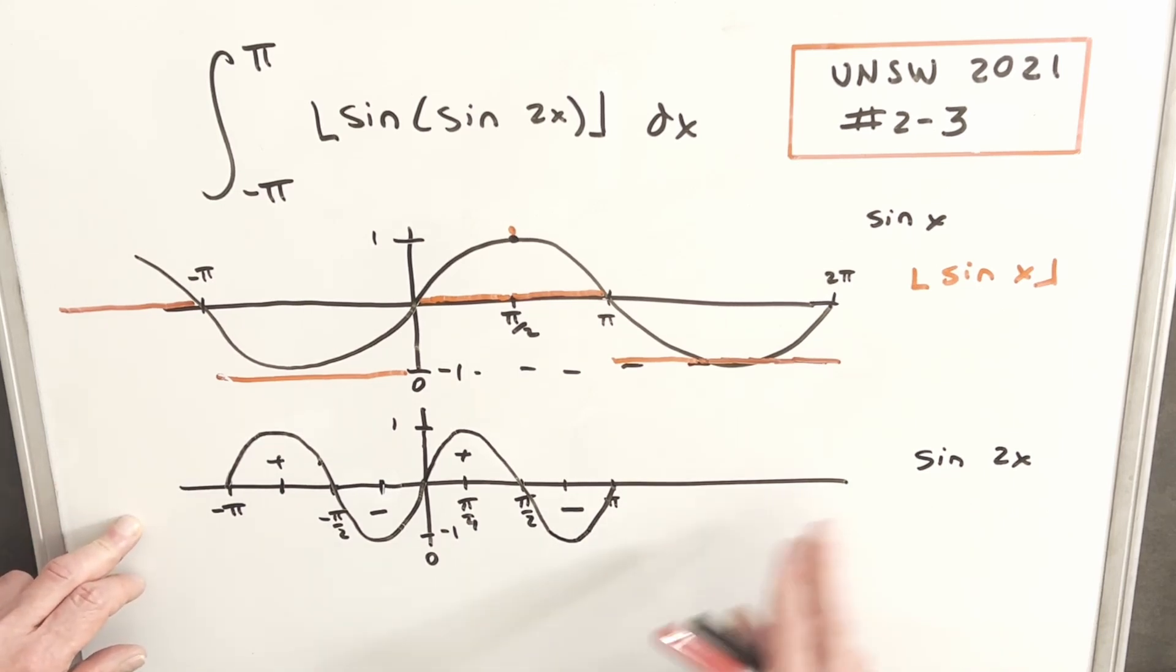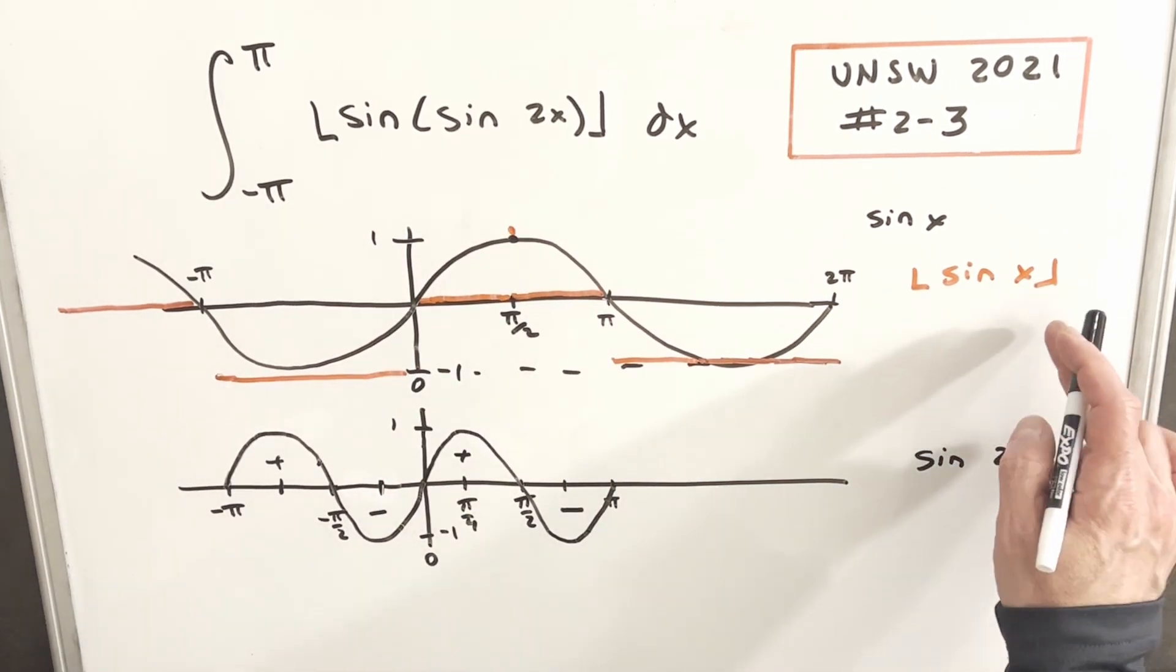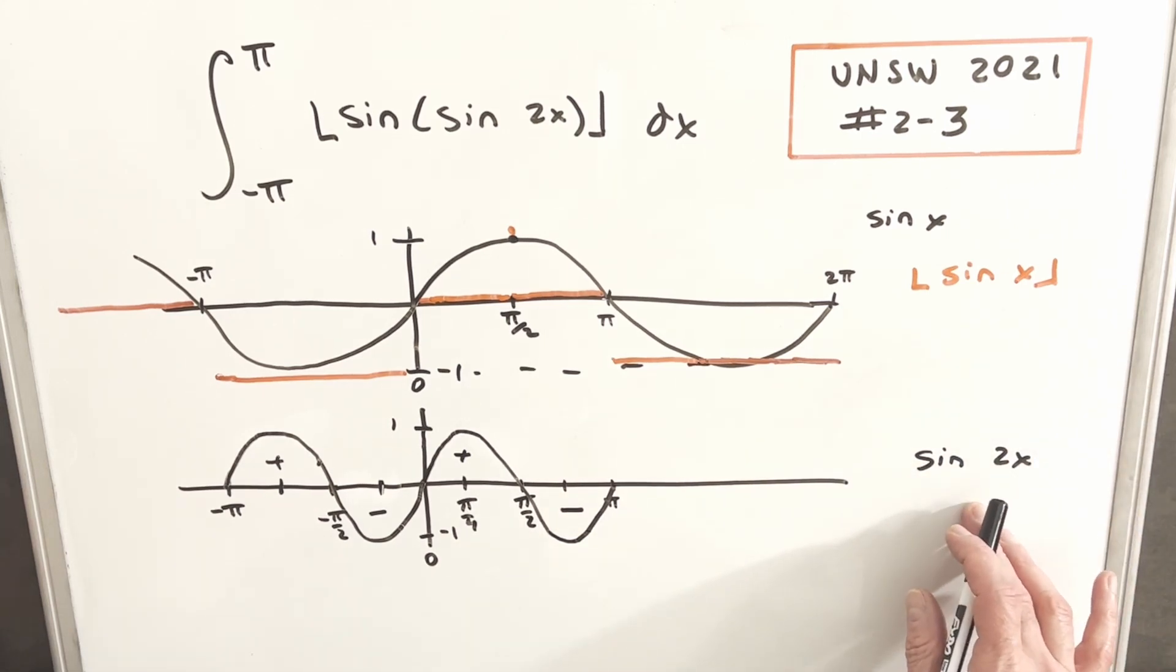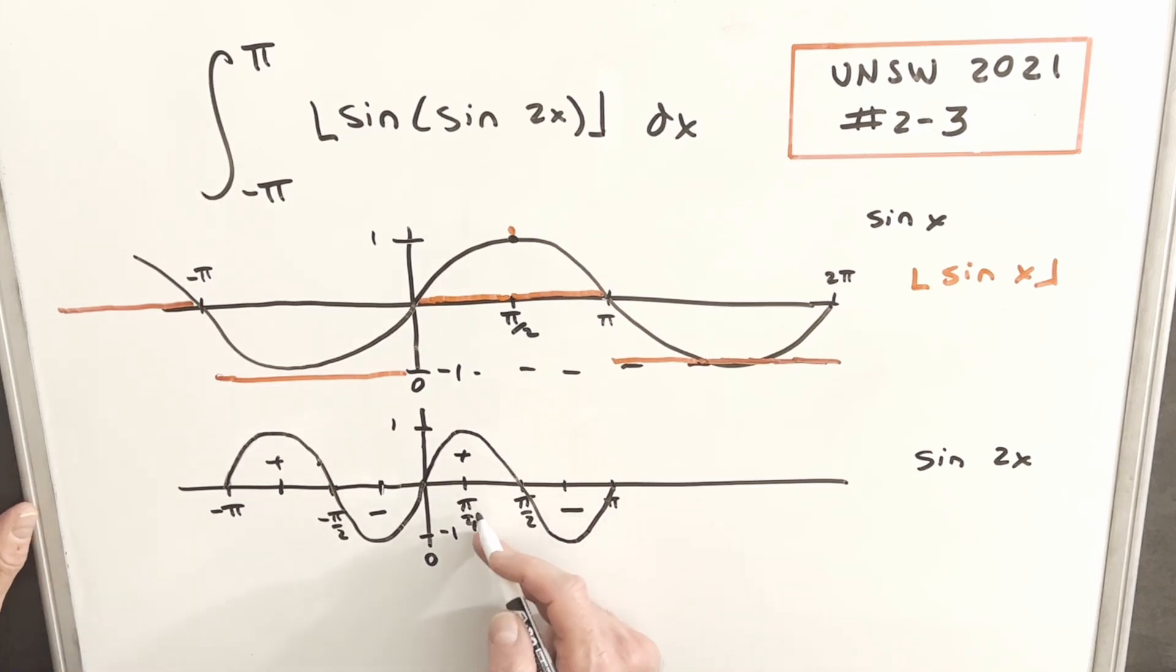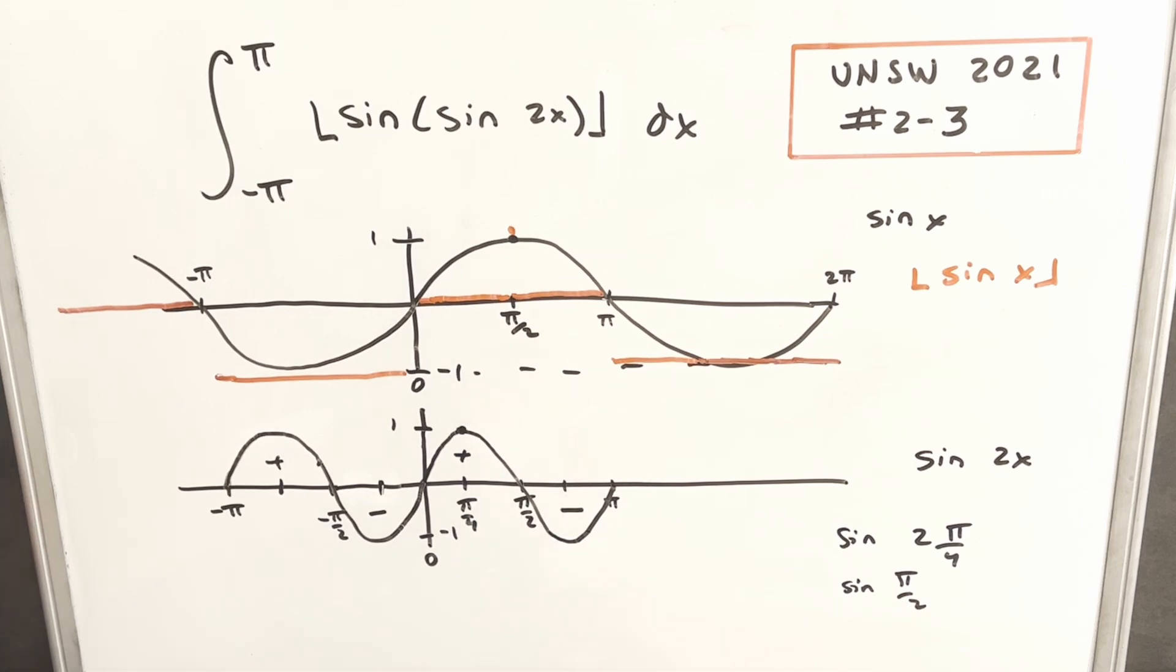To put this all together, we're taking what we have here, sin(2x). This is actually our input into the sine function. Now that we have some feel for the floor of sin(x) and we have our input sin(2x), let's try to put this all together and get back to our integral. I think a good point to look at is π/4. Sin(2x) at π/4, so sin(2 times π/4) is going to be just sin(π/2). So this point right here is 1. At π/4, the value of sin(2x) is 1.